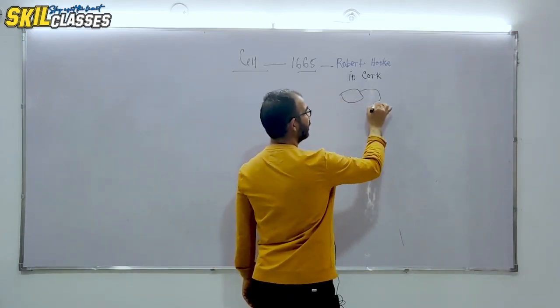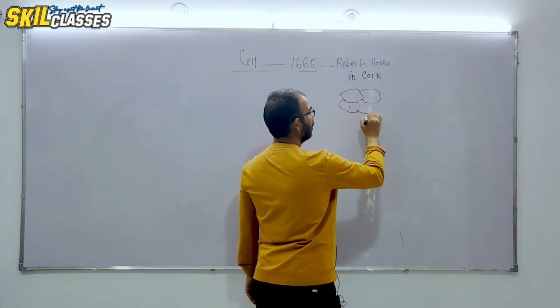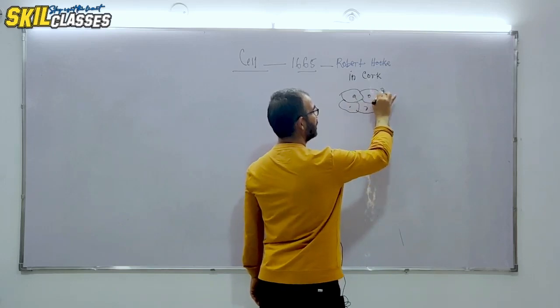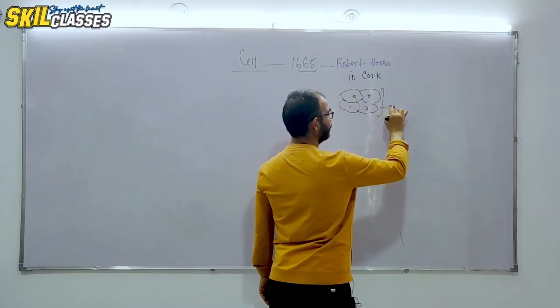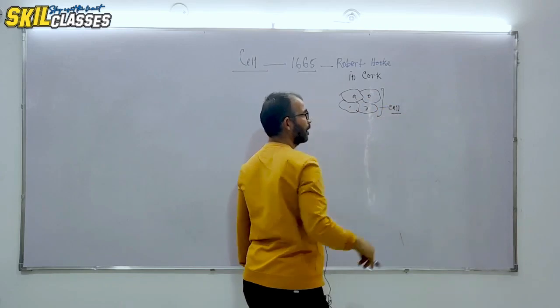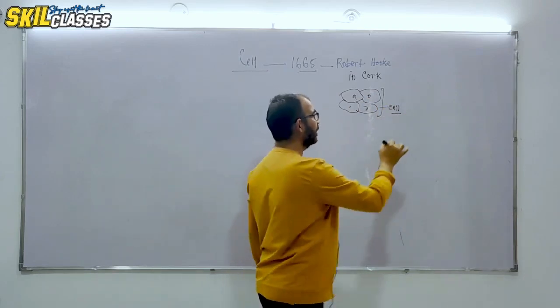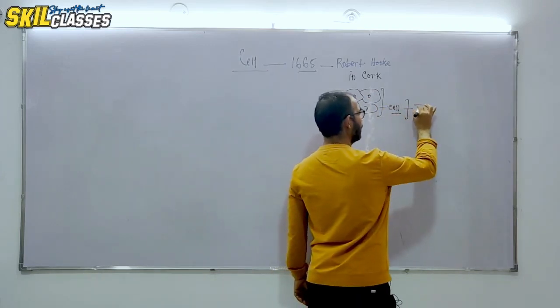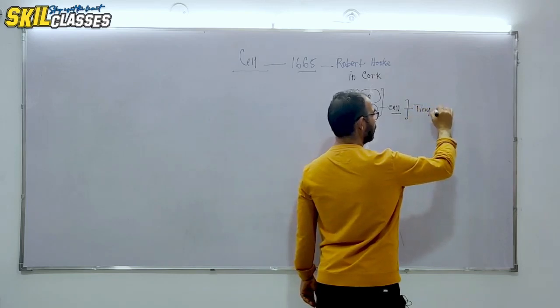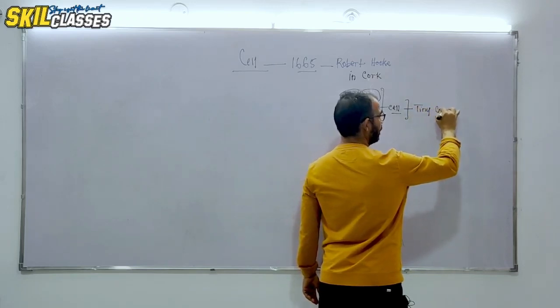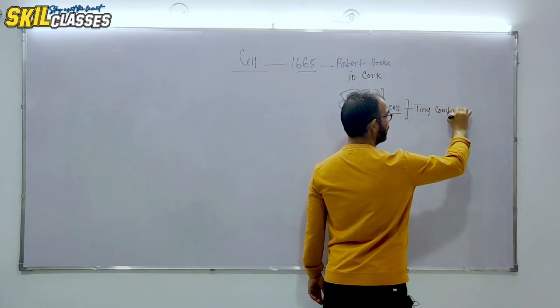So cell is basically a tiny compartment, a small room. Some people call it small parts or sections.